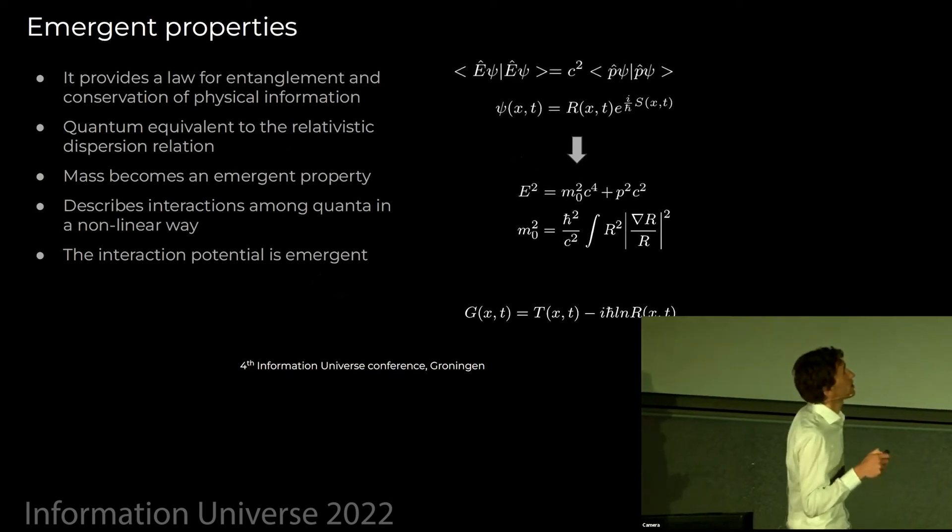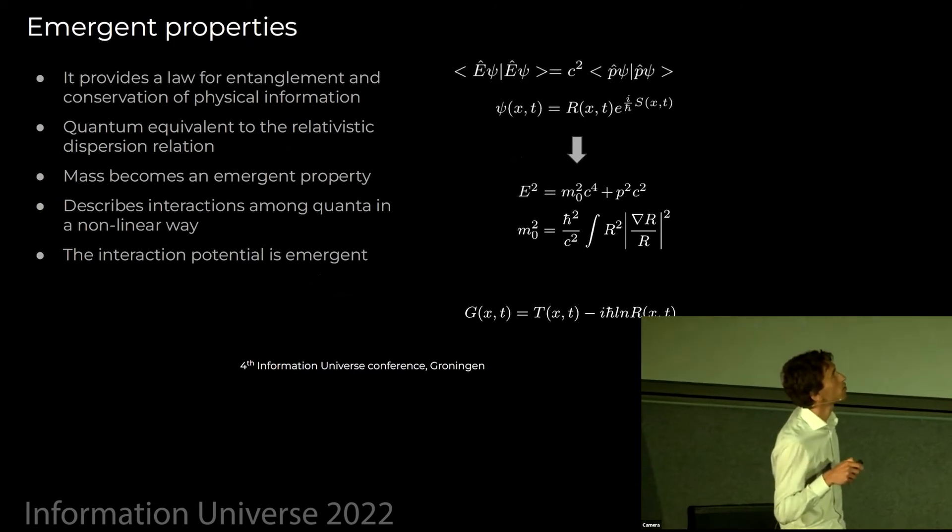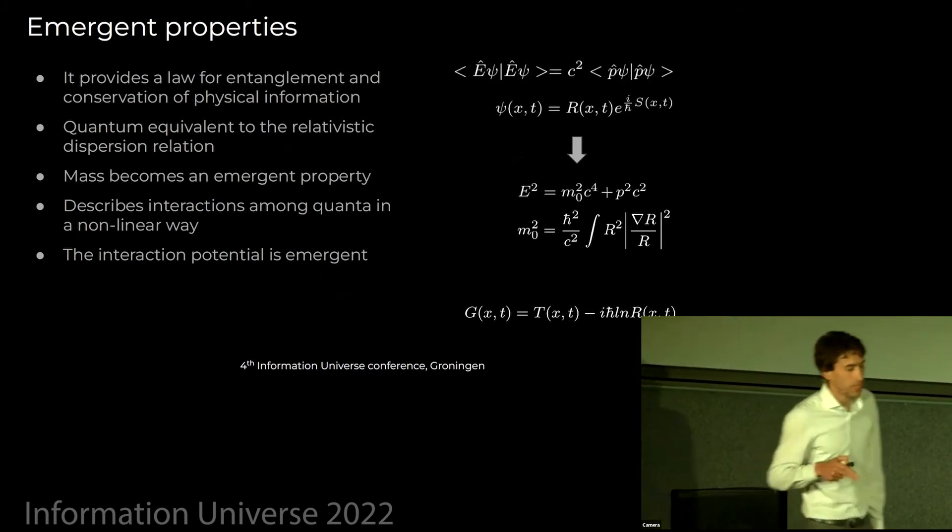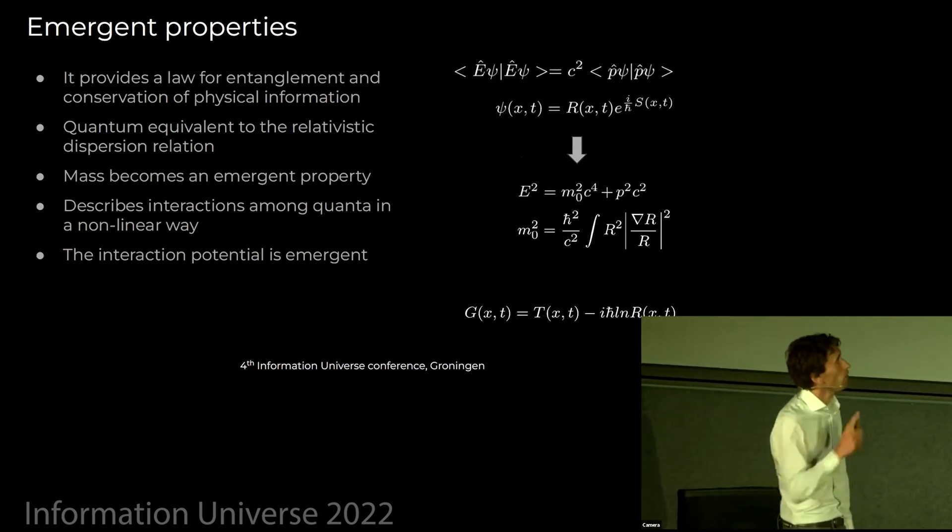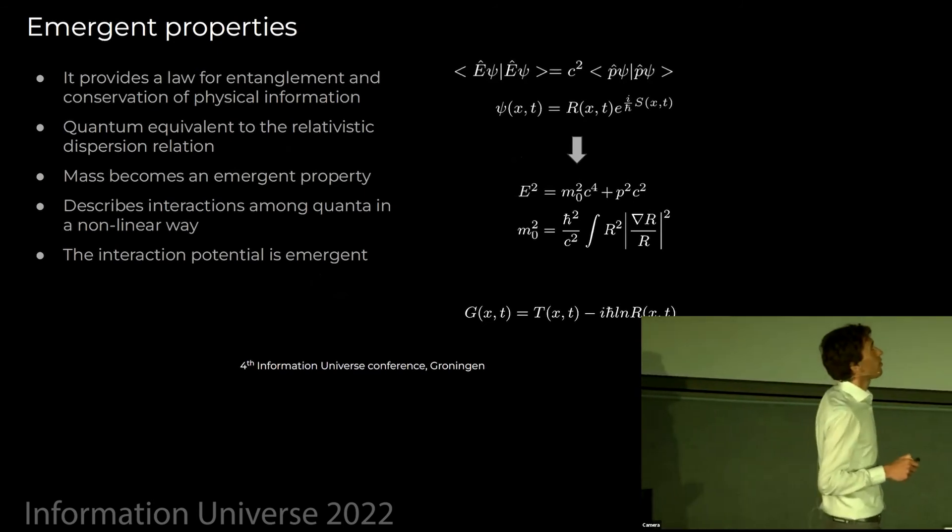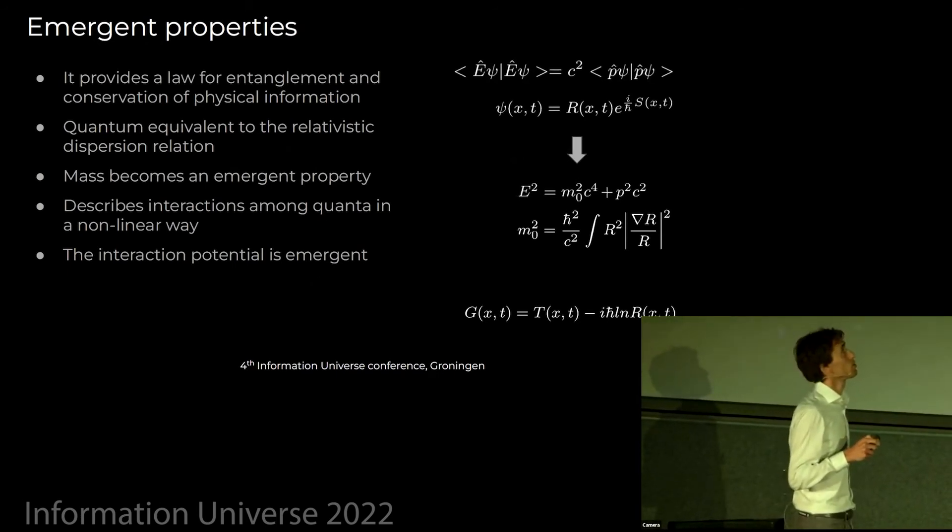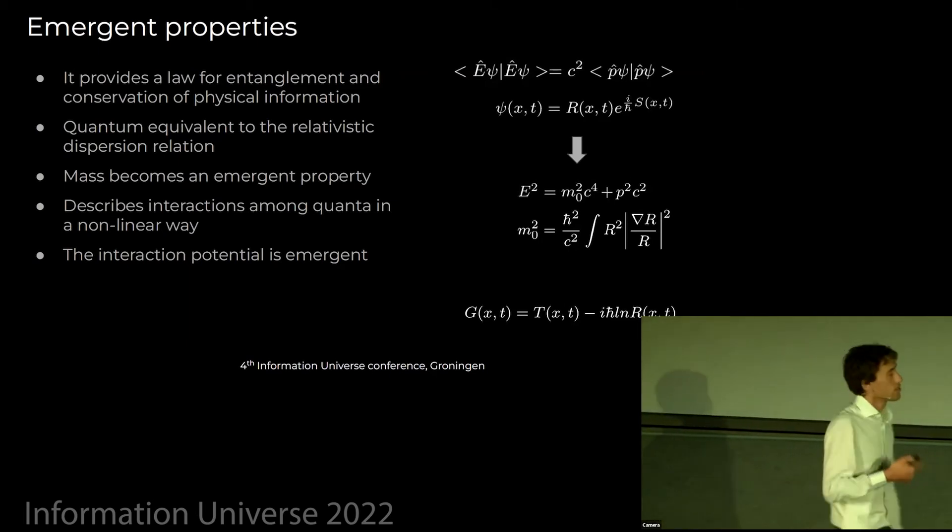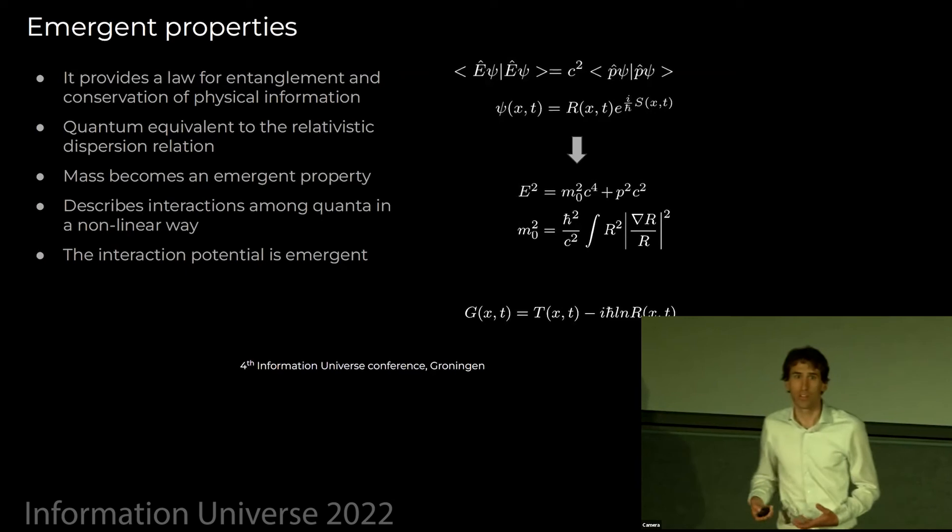To understand even further what we've written down there, and this is really how I got there, I started from this one and then I started to put a Bohm-type wave function where R is the amplitude of the wave function, S is the action, just to try to understand what does this mean. Once you do that, you can get the relativistic dispersion relation out of it with only one extra ingredient. You need to allow yourself to define the mass of the particle as an emerging property of the interaction between these two scalar fields, and it becomes something on a gradient of the wave function amplitude.